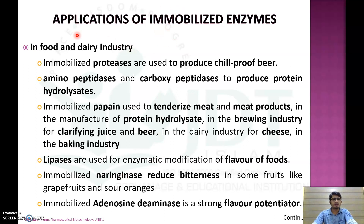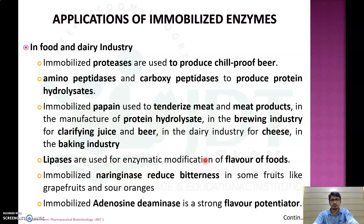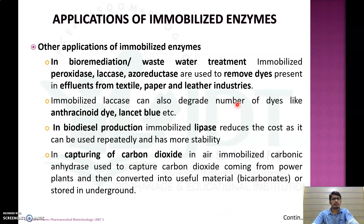In the food and dairy industry, immobilized proteases are used for production of chill-proof beer; aminopeptidase and carboxypeptidase are used to produce protein hydrolysates; immobilized papain is used to tenderize meat and meat products, in brewing for clarifying juices and beer, and in dairy industry for production of cheese. Lipase is used for enzymatic modification of food flavors. Immobilized naringinase reduces bitterness in grapefruits and sour oranges, and immobilized adenosine deaminase is used as a strong flavor-potentiating agent.